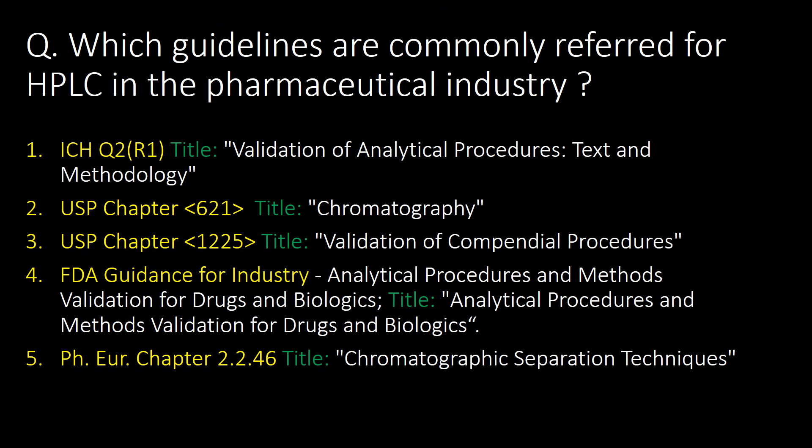Which guidelines are commonly referred to for HPLC in the pharmaceutical industry? The five commonly referred guidelines are: first, ICH Q2(R1); second, USP chapter 621; third, USP chapter 1225; fourth, FDA Guidance for Industry; and fifth, European Pharmacopoeia chapter 2.2.46.